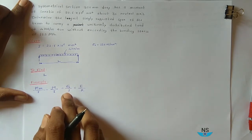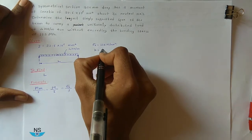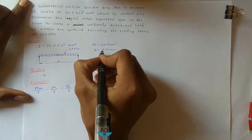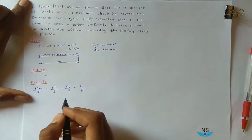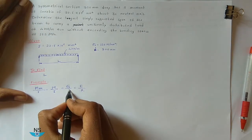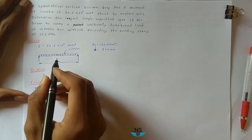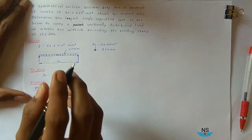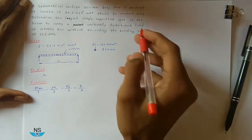σ_B is given. Y we can find since D = 300 mm. Then M we can find, and I is given. So let us proceed to the solution.